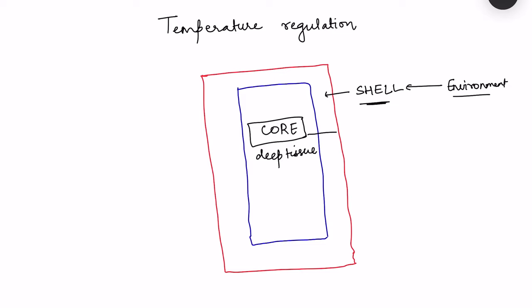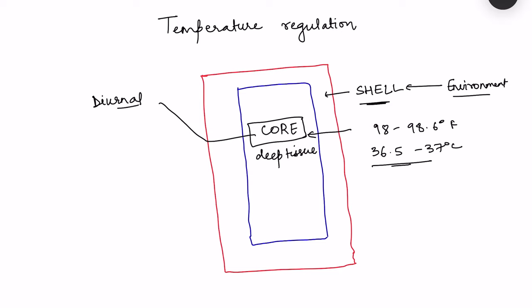The normal value of core body temperature is 98 to 98.6 degrees Fahrenheit, or 36.5 to 37 degrees Celsius. But there are variations in this core body temperature as well. There are diurnal variations where it is lowest when we are sleeping. When awake, it is lowest in the morning at 6 a.m. and highest in the evening.